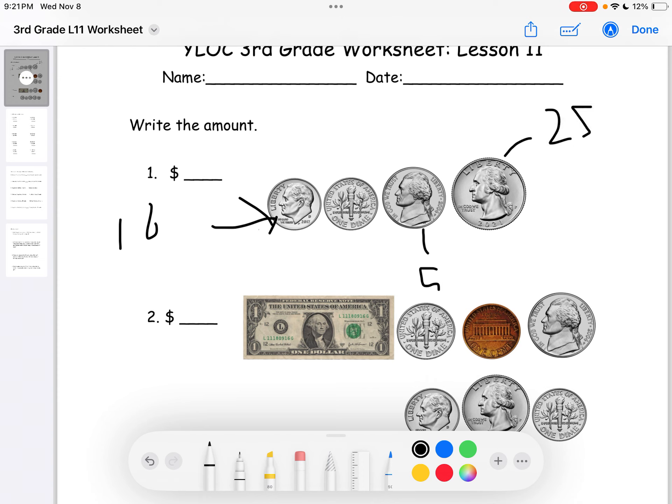So, since we have two dimes, that would be 20 cents right here. One dime, 5 cents. And the one quarter, 25 cents. So, if we just add all of these up, it will equal 45 cents. Oh, sorry. It's in dollars. So, you're going to have to do $0.45 since it's 45 cents.